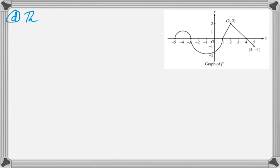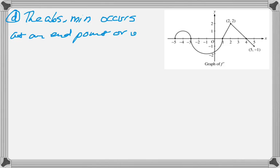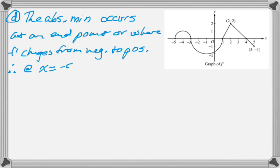And finally, part d, we're looking for the absolute minimum value. The absolute minimum value can occur at an endpoint, or it could occur where the derivative changes from negative to positive. So our options are negative 5, which is an endpoint, at 1, which is where the derivative changes from negative to positive, and at 5, which is the other endpoint. What we have to do now is figure out the y values at each of those.